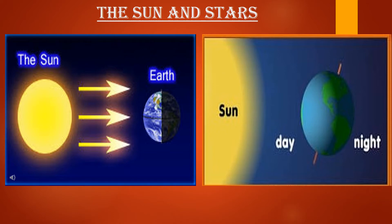This happens because of the Earth's rotation — the movement of the Earth, as I explained in the last lesson. Because of the rotation of the Earth, days and nights occur. The cause of day and night is the movement of the Earth.